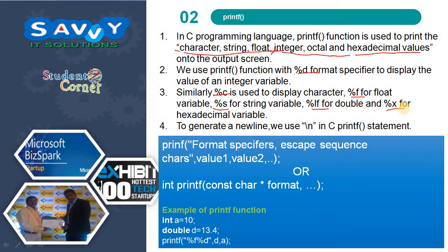To generate a new line we use backslash n, and it is also called an escape sequence character in C printf statements. The syntax for printf uses format specifiers as we already discussed in the scanf function. Newly added are escape sequence characters which we will learn in the next slide, along with variable 1, variable 2, and so on.